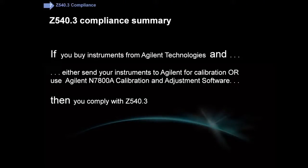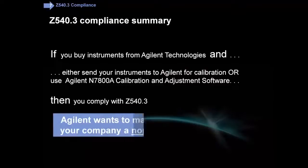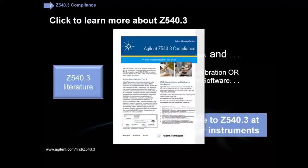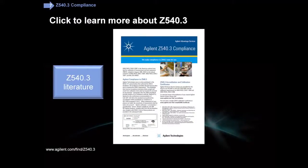In summary, it's pretty simple. If you're buying instruments from Agilent Technologies and either send them to us for calibration or use our N7800 Cal software platform, then you comply with Z540.3. Agilent wants to make sure that compliance to Z540.3 at your company is a non-event for our instruments. If you'd like more information on Z540.3, we have links and literature — you can click the button shown here or use the URL to find it on the web.